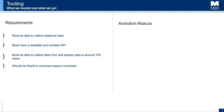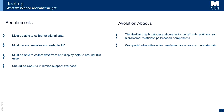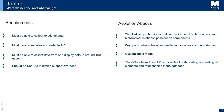Evolution Abacus has a flexible graph database that allows us to model both relational and hierarchical relationships between components. It has a web portal where a wider user base can access and update data. It has a customizable meta model on the back end, so if we need to model an area of the business or technology that Abacus doesn't support out of the box, we can easily customize it. It also has a node database REST API capable of both reading and writing all elements and relationships, and an algorithms function that allows us to calculate weightings and update records.